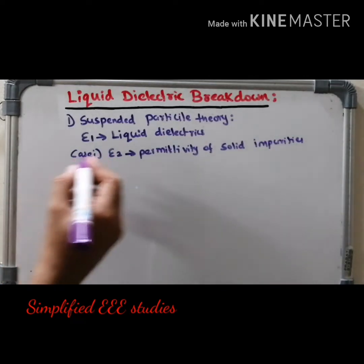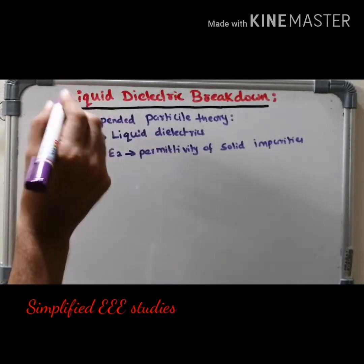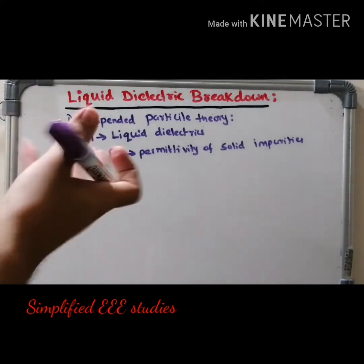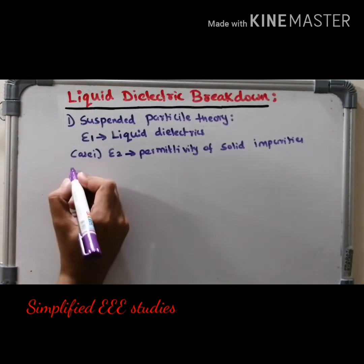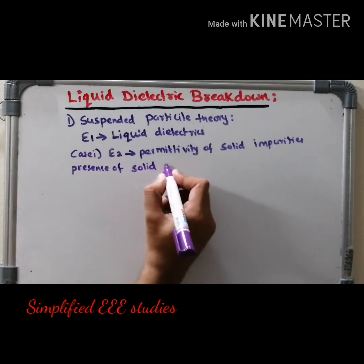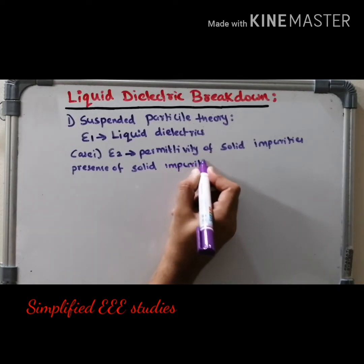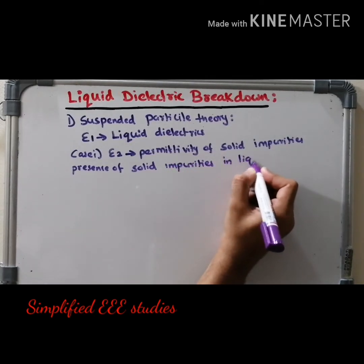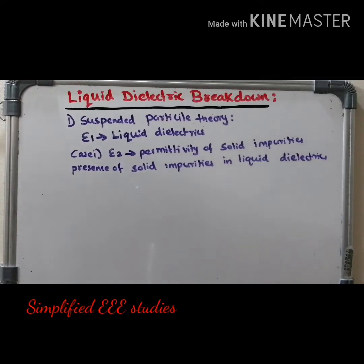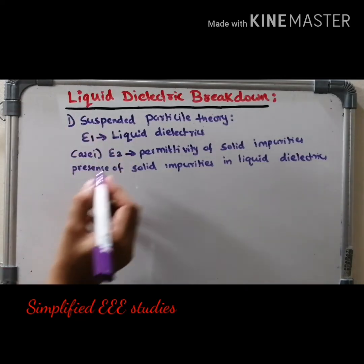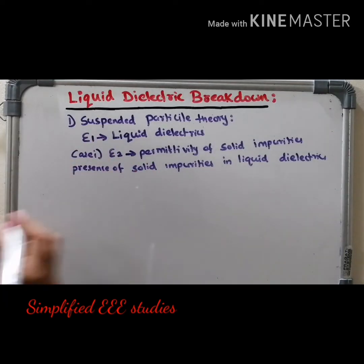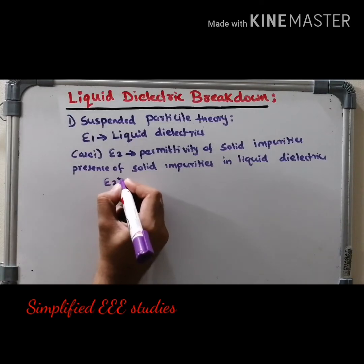In the first case, solid impurities are present inside the liquid dielectric material. Epsilon 2 is the permittivity of solid impurities and epsilon 1 is the permittivity of liquid dielectric. Obviously, we can say epsilon 2 is greater than epsilon 1.